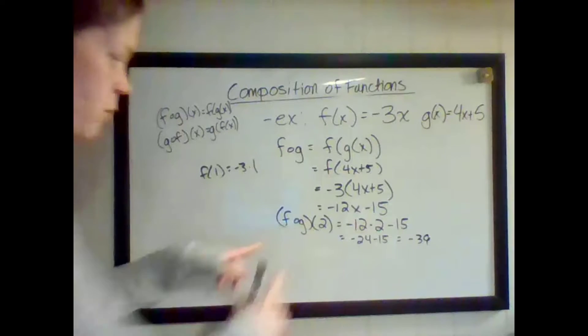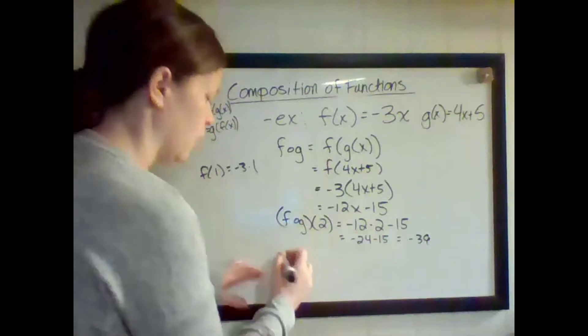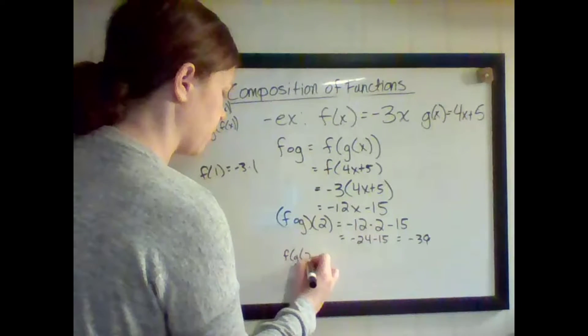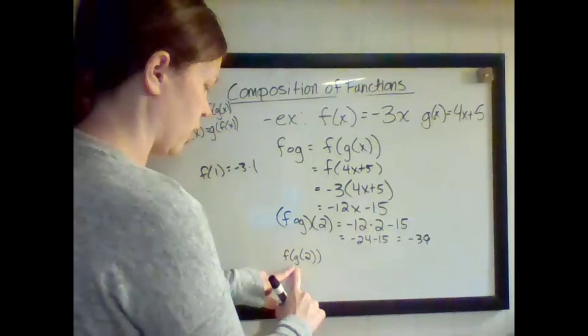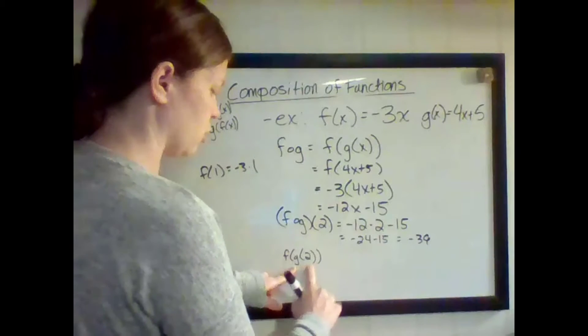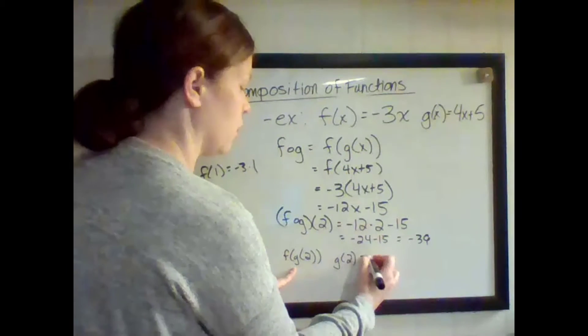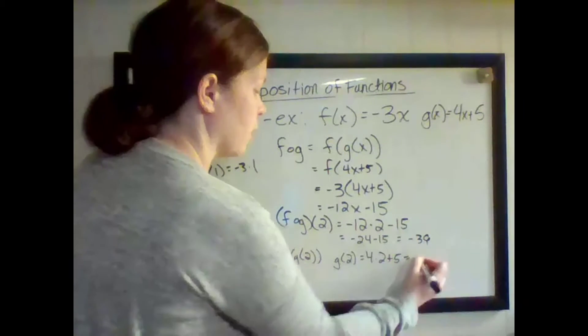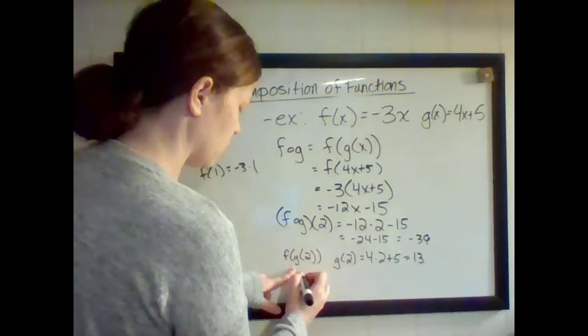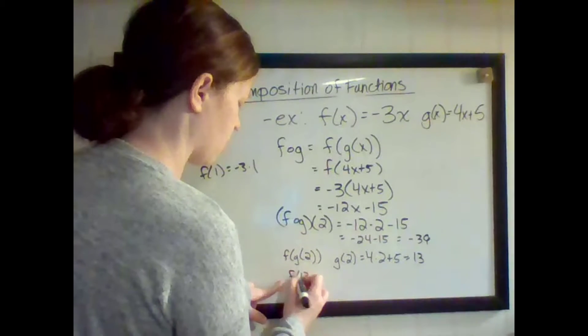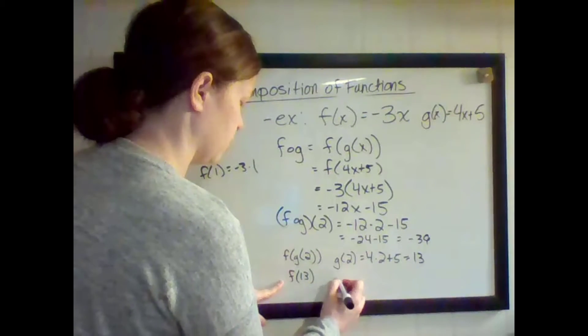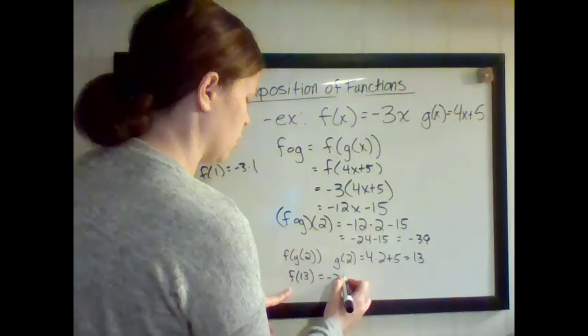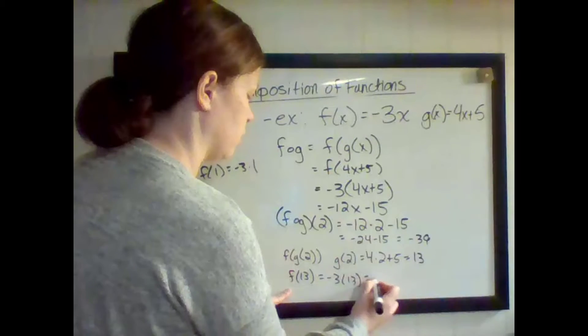Now I'm going to go back. This was the quickest way to get it, but just kind of really trying to figure this out a little better, this composition. Let's do it a different way. Let's say first I'm going to do G of 2. So G of 2 is 4 times 2 plus 5. 8 plus 5 is 13. So now this is 13. So F of 13, that should be negative 3 times 13 is negative 39.